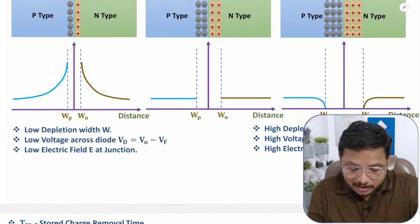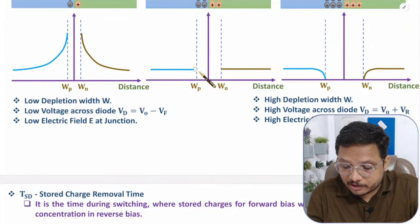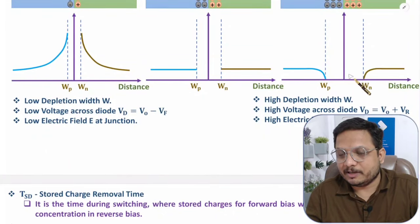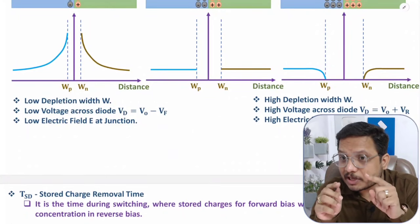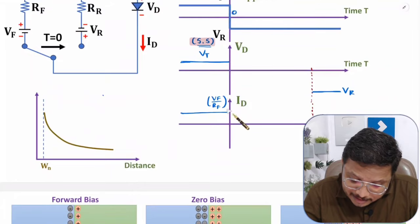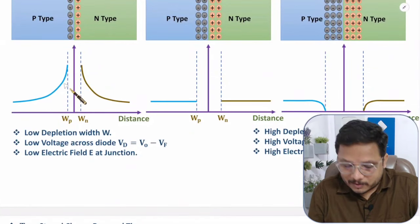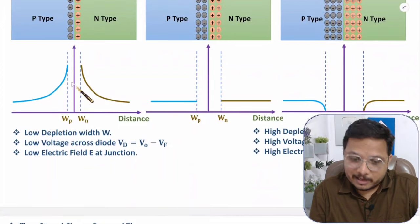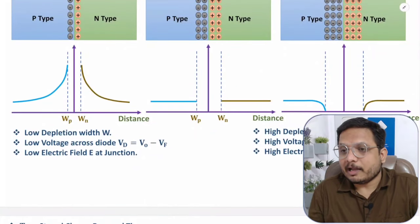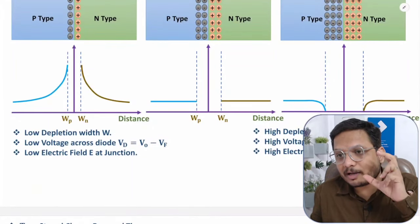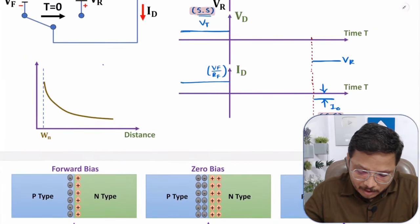When you switch the diode from on to off, the minority carriers get shifted: holes of N-type move toward P-type and electrons of P-type move toward N-type. This shifting is gradual — concentration decreases, then reaches a neutral state, and after that goes to reverse bias state. At T equals zero, there is a large quantity of minority carrier concentration, and because of that movement, there will be a flow of current.